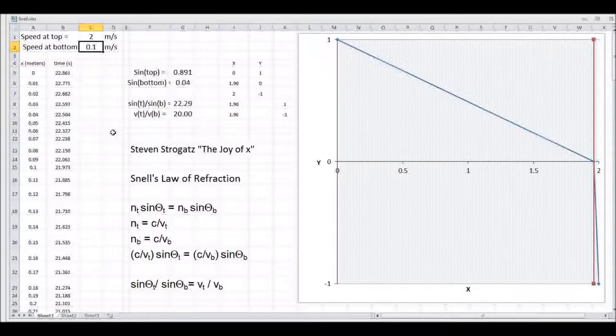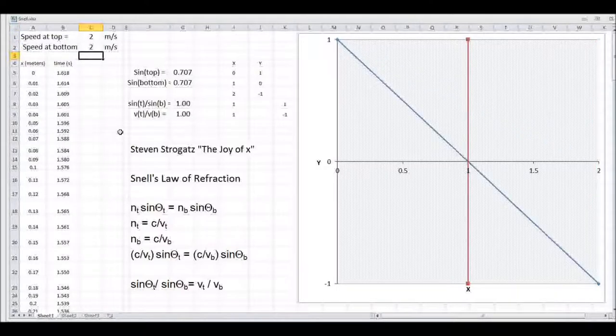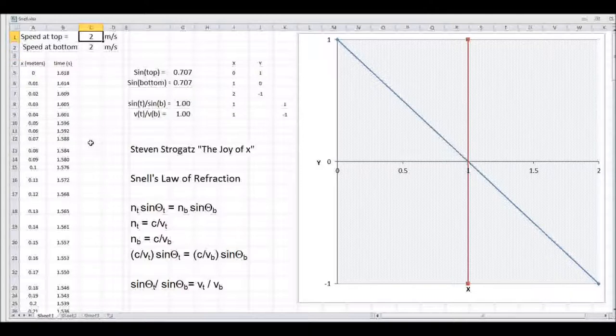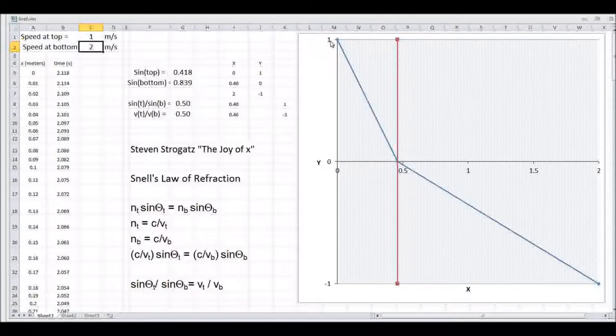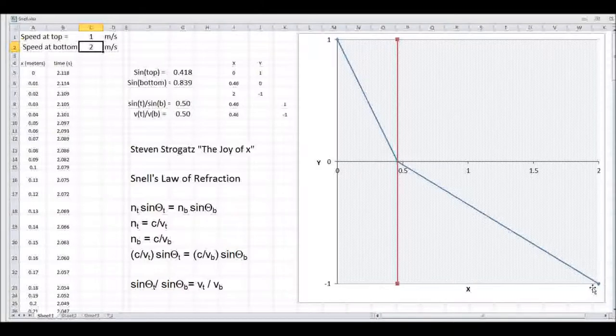Let's go back to the 2 to 2. And now let's make the top field a rough one. And let's make it 1. And you can see it makes the distance traveled in the top field smaller and that in the bottom field longer.